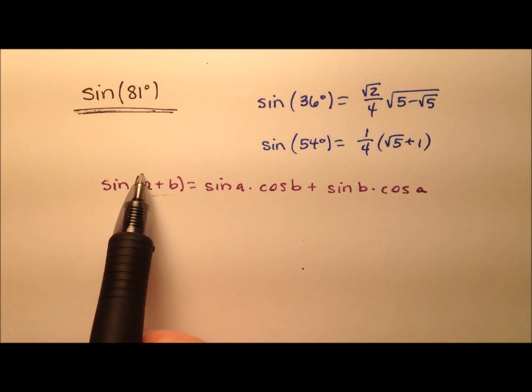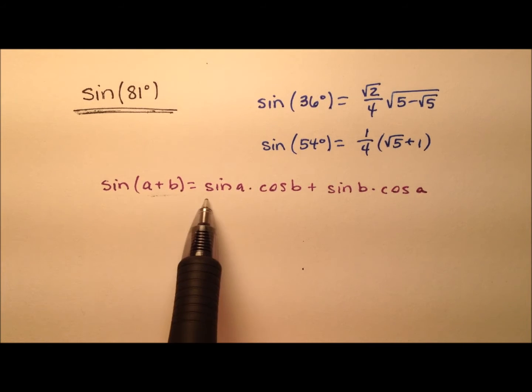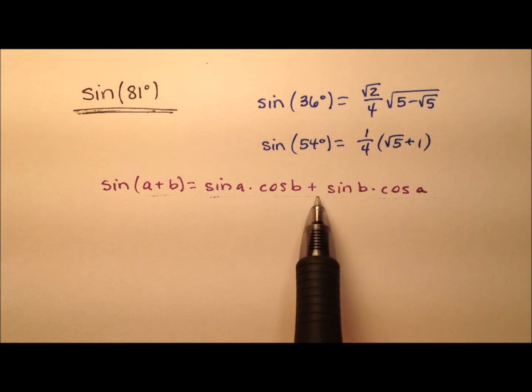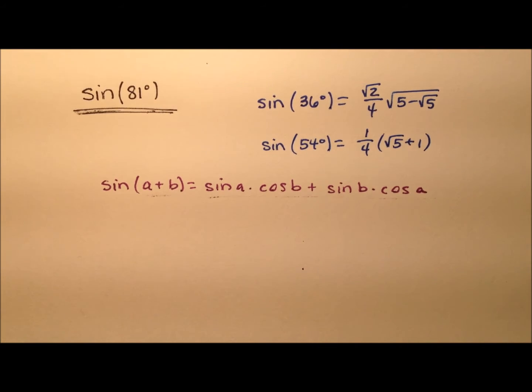It says the sine of, and we have these two angles, a and b, and we're going to add them together. And it has this expansion. It's the sine of a, that first angle, times the cosine of b, that second angle, plus the sine of b times the cosine of a.